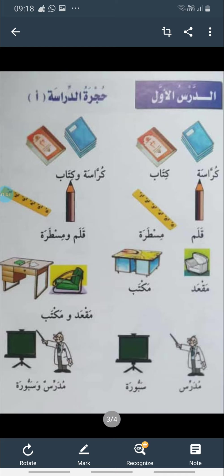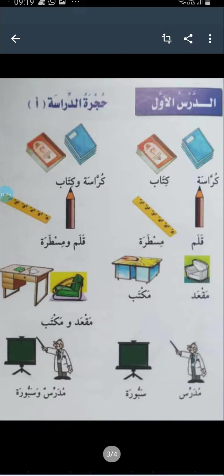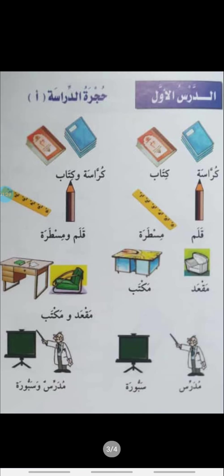Second is kitabun — kaaf, ta, alif, ba, nun — kitabun. Kitabun ka meaning hai book, kitab means book. Kurrasatun wa kitabun — notebook and textbook.